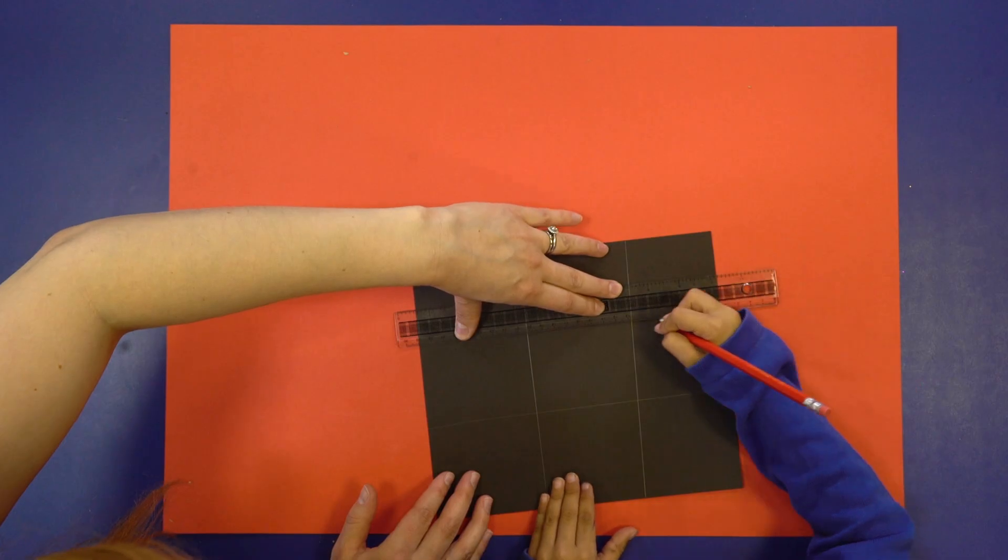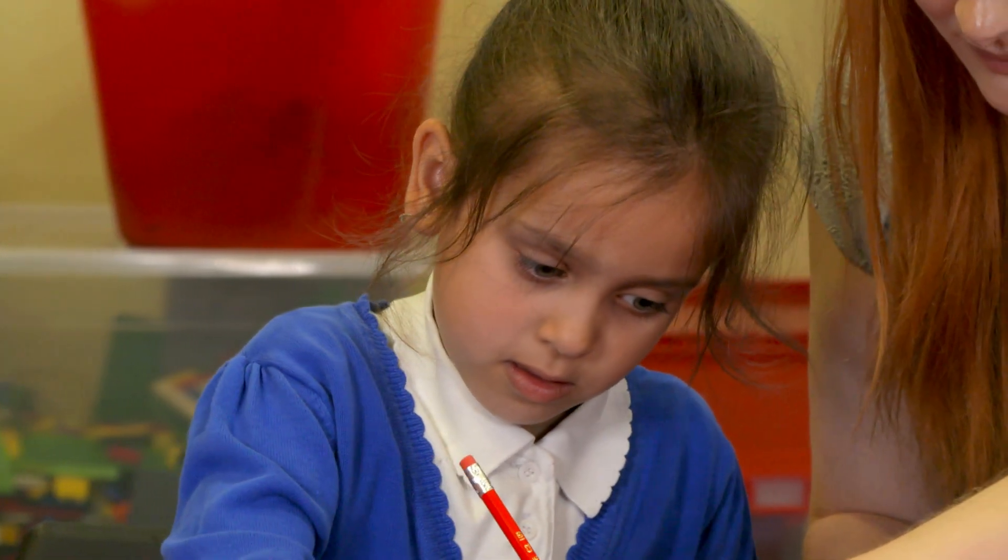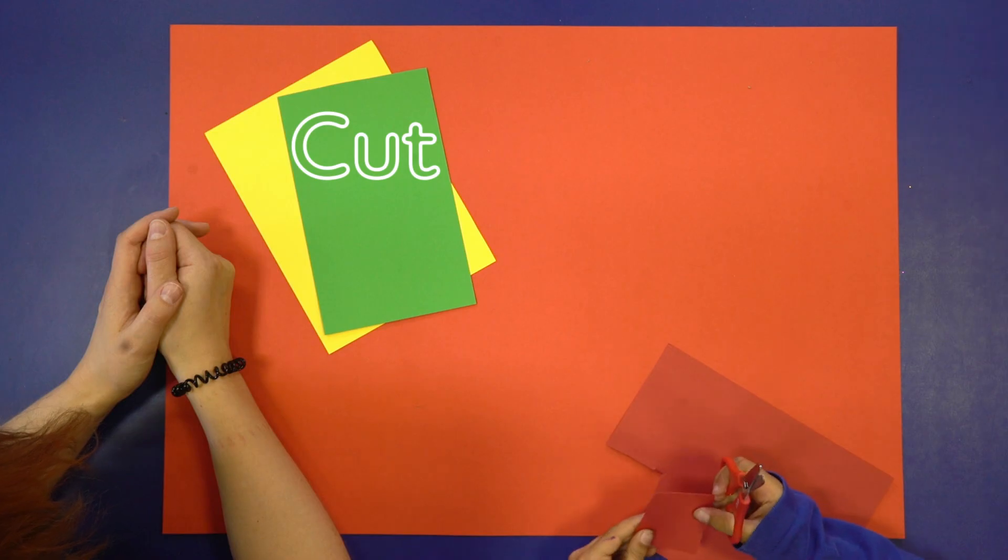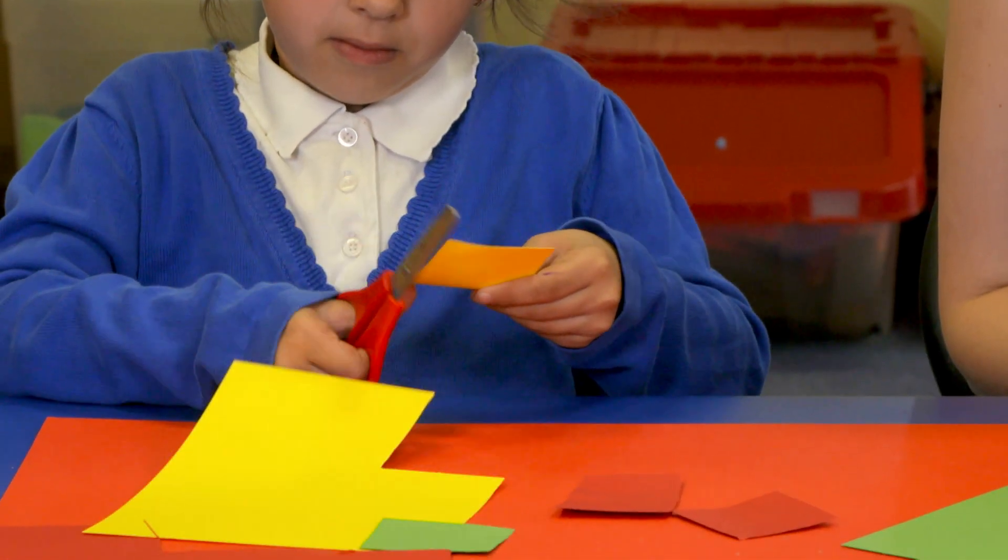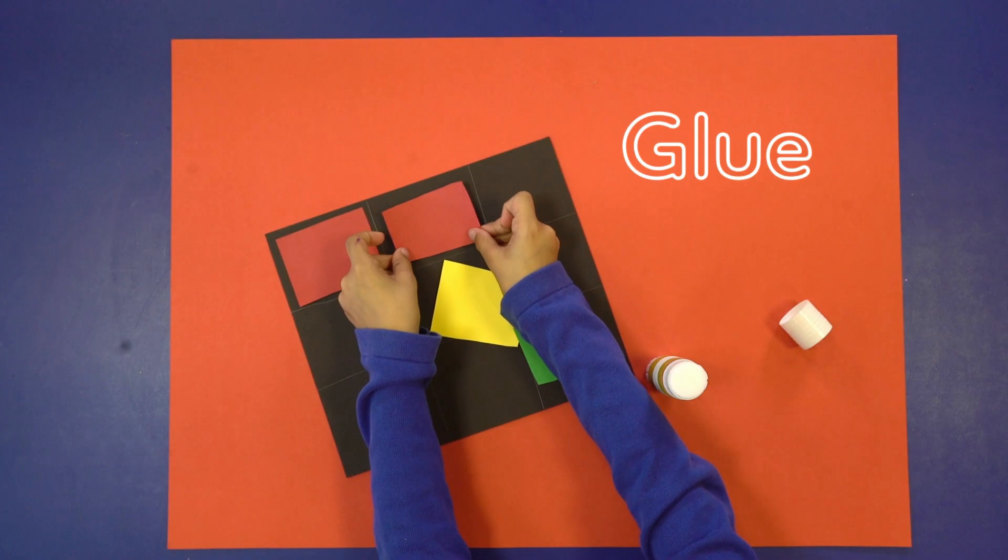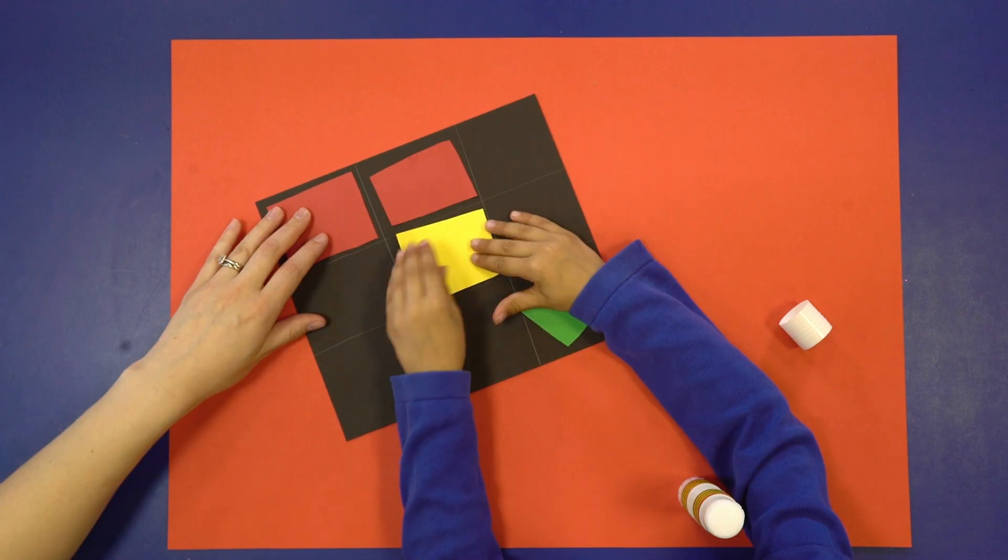Divide a black piece of paper into nine squares. Cut out some red, yellow, and green squares. Glue the colored squares onto the black sheet of paper like this.